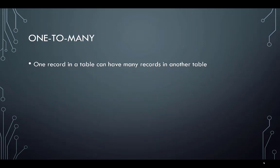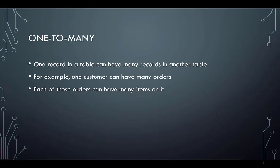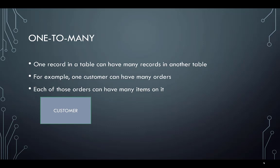In a one-to-many relationship, there's one record in a table that can have many records in another table associated with that ID. For example, one customer can have many orders, and each of those orders can have many items on it. One customer can have many orders, and we would represent that in a relationship using what's called a crow's foot, which identifies that one customer can have many orders.